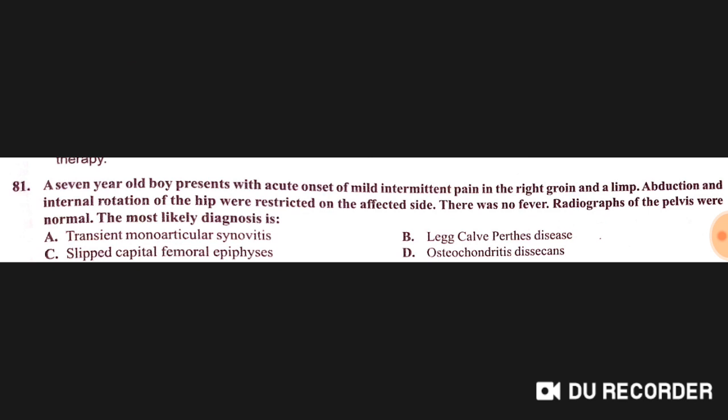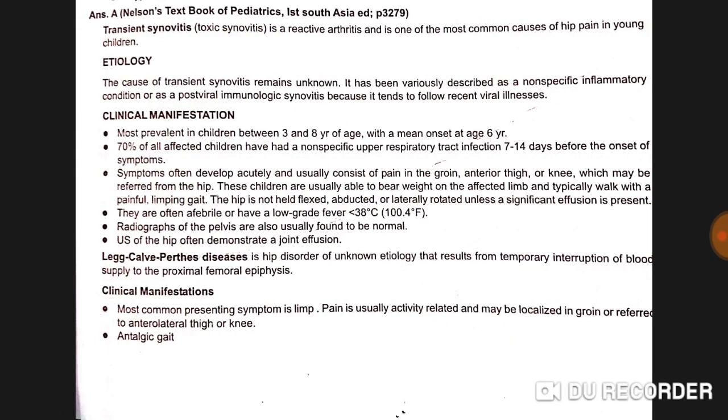A seven-year-old boy presents with acute onset of mild intermittent pain in the right groin. Limb abduction and internal rotation of the hip were restricted on the affected side. There was no fever and radiographs of the pelvis were normal. The most likely diagnosis is transient monoarticular synovitis, which is one of the most common causes of hip pain in young children.